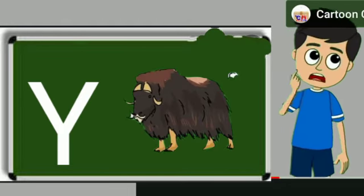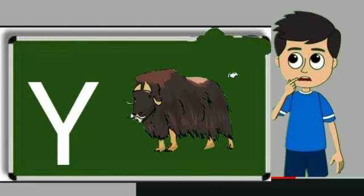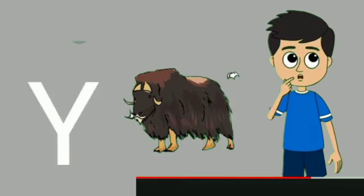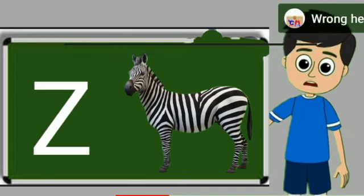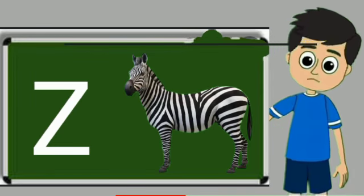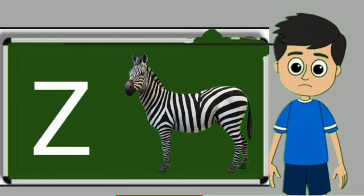Y for yak. Yak means bell. Z for zebra. Zebra means zebra.